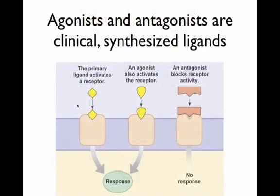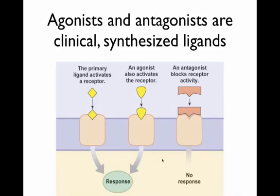This is important because we make a lot of drugs that interact with signal transduction mechanisms. Some drugs are agonists — an agonist is going to cause the same effect as the native ligand. It binds to the same receptor and causes the same response. We can also make antagonists, which are blockers — like competitive inhibitors. An antagonist sits right on the binding site of the receptor and prevents the ligand from binding, stopping the signal transduction mechanism. So if you understand how a beta receptor works, it makes sense what a beta blocker does.